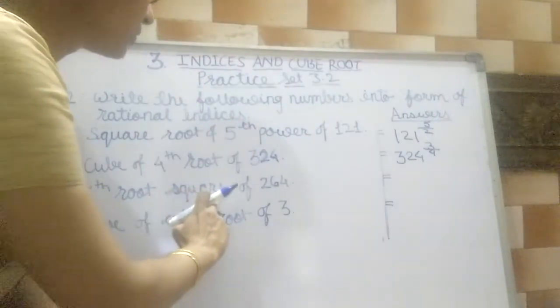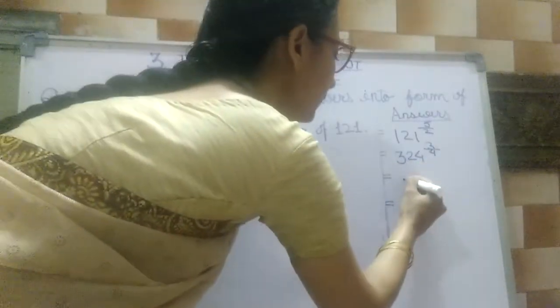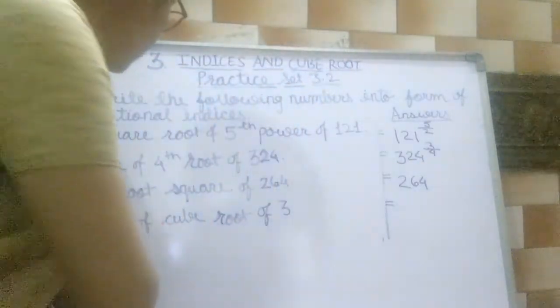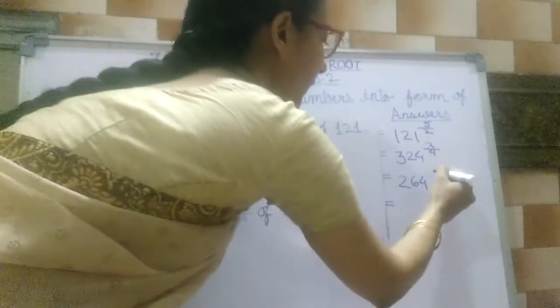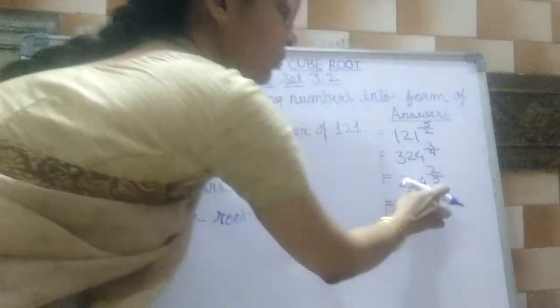Next, 5th root of square of 264. 264 is the base and the index is 5th root of square, so the index is 2 by 5.